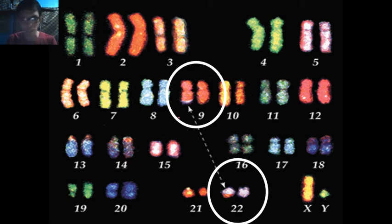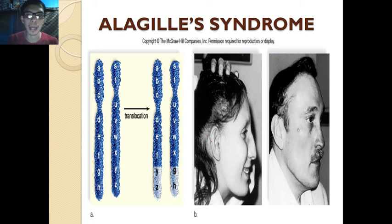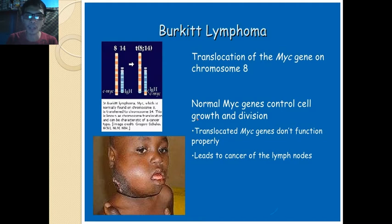Examples of translocation include Alagille syndrome and Burkitt lymphoma — abnormal growth in the lymph nodes due to translocation of genes, particularly on chromosome 8.